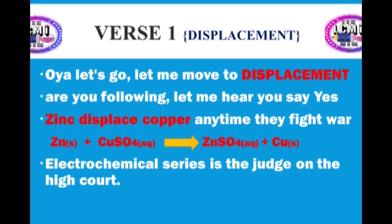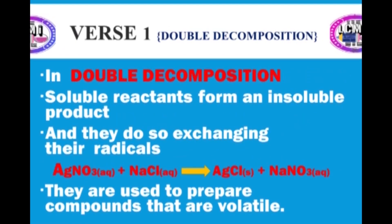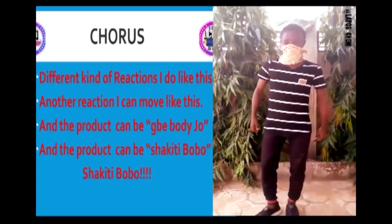Let me move to displacement — are you following? Say yes. Single displacement: they fight for position in the electrochemical series, which is the judge. In double decomposition, soluble reactants form an insoluble product, and they do so as their radicals are exchanged. They are used to prepare insoluble or volatile salts.